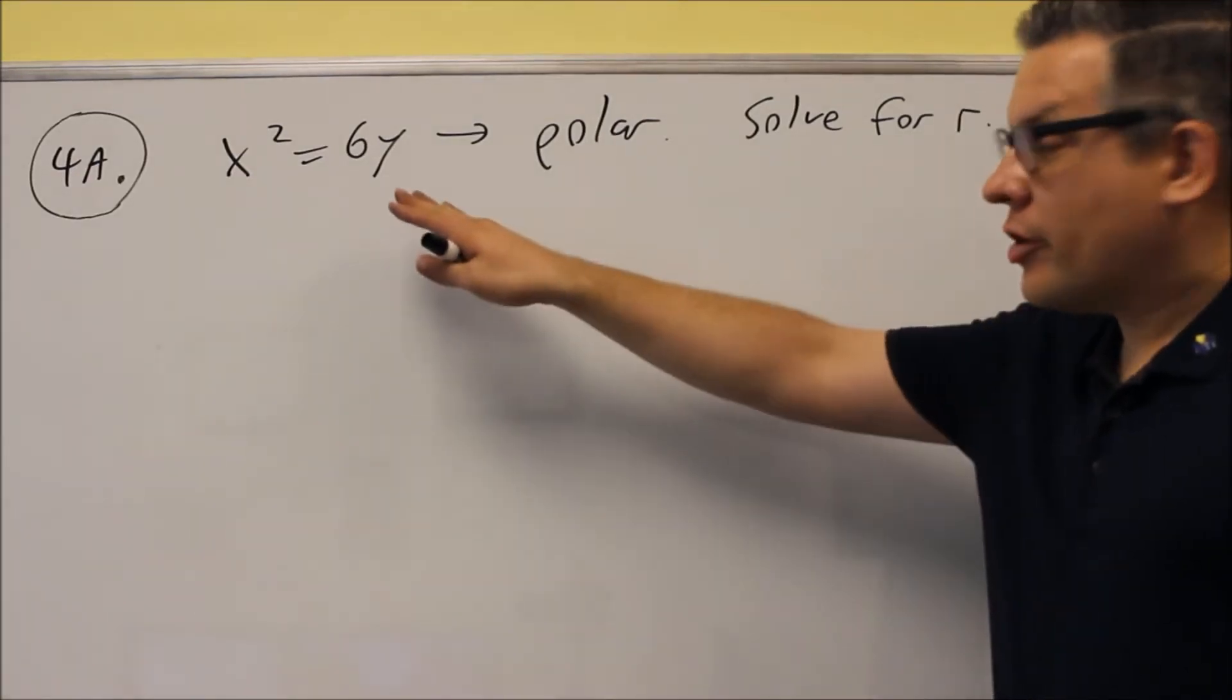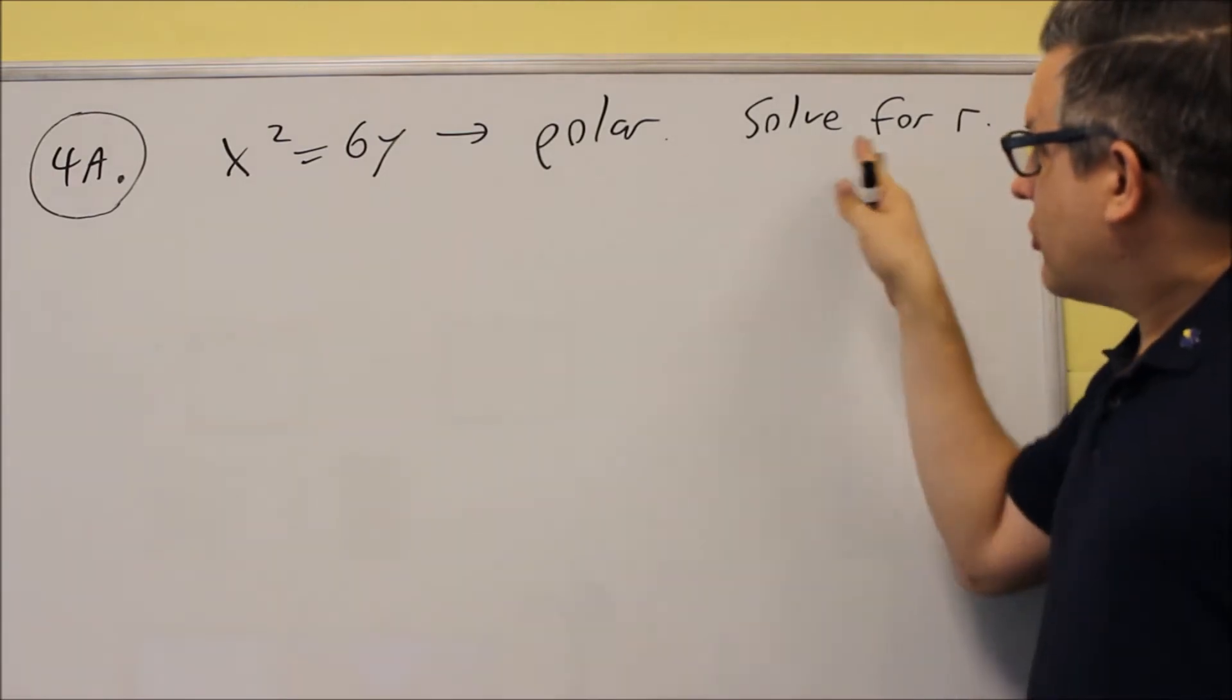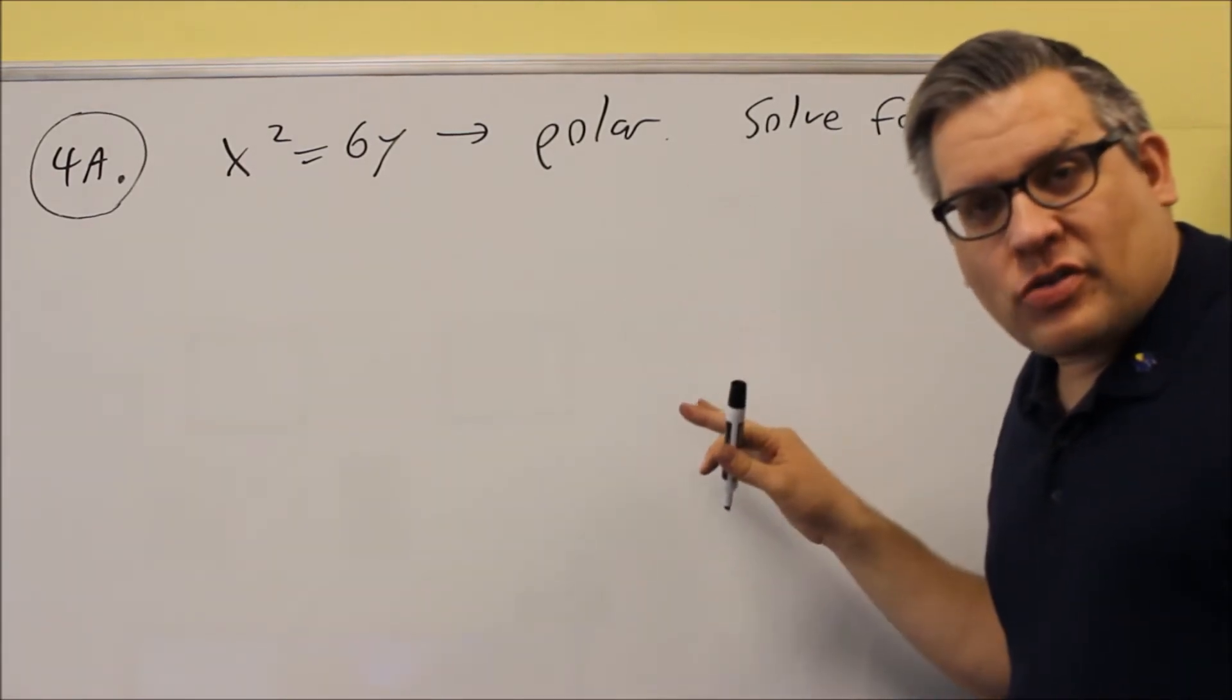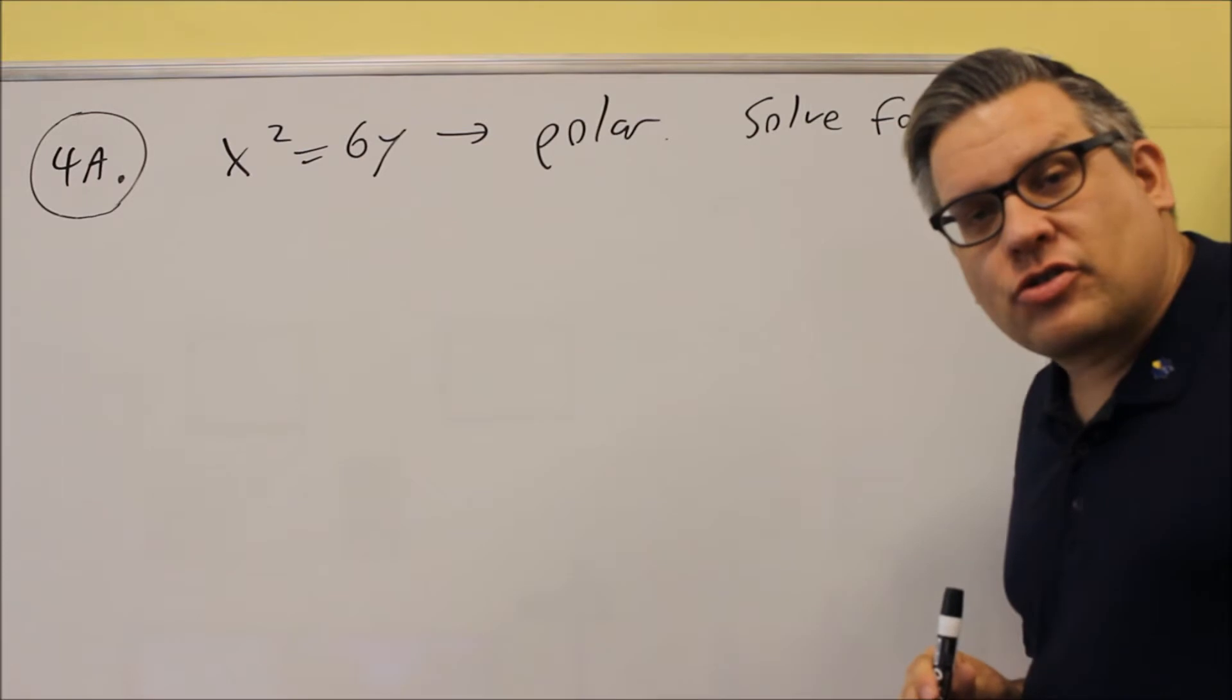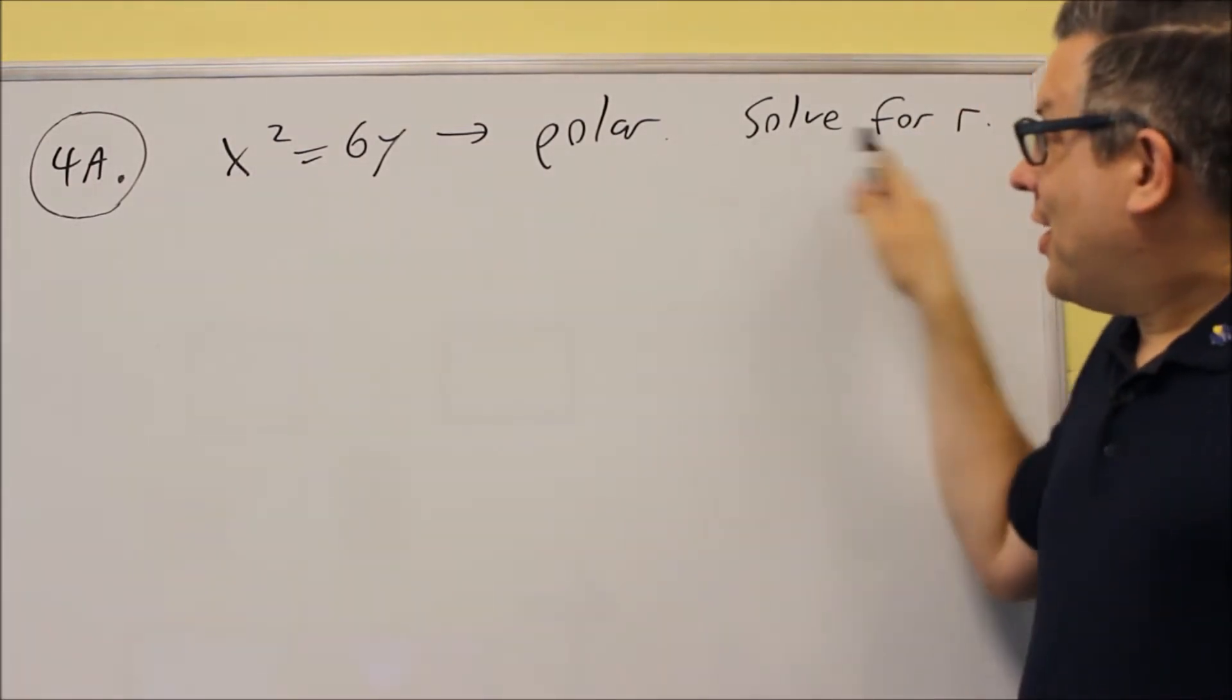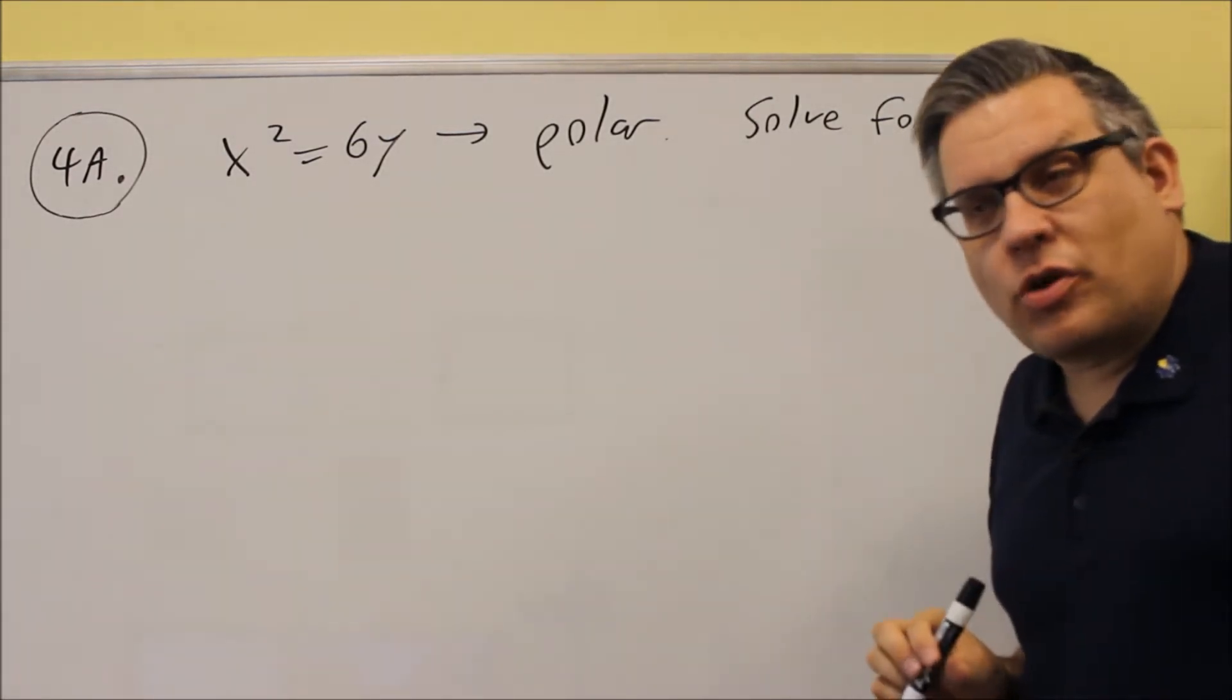Okay, number four. We're going to go from rectangular into polar. For number four, they're going to ask you to solve for R, so this one will not be multiple choice. Number three will, because that's asking you to go into rectangular and there's different ways you could express your answer in rectangular. But when we take it over into polar, solving for R will be more straightforward. That's why there won't be multiple choice on this one.